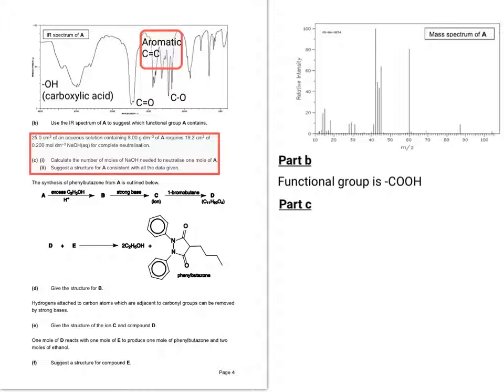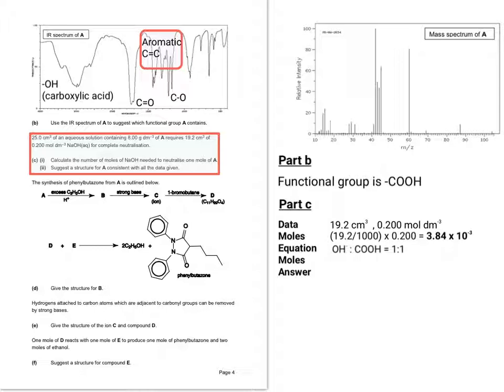So moving on to part C, it says 25.0 cm3 of an aqueous solution containing 8g per decimetre cubed of A requires 19.2 cm3 of 0.2 NaOH for complete neutralisation. It says calculate the number of moles of NaOH needed to neutralise one mole of A and then suggest a structure for A consistent with all the data given. So normally we'd use the data moles equation moles answer method. So inserting the data for the NaOH, we get 3.84 times 10 to the minus 3 moles.